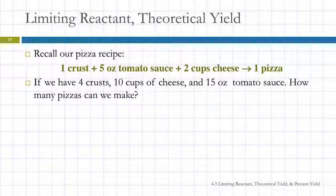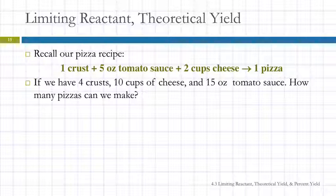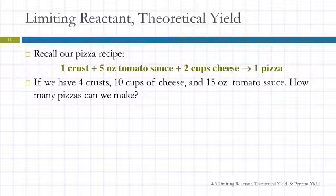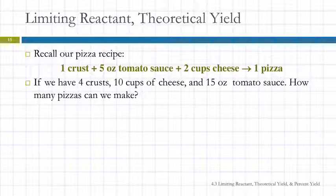As someone wisely pointed out earlier, with our pizza calculation — the 10 cups of cheese — that's provided you have enough of the other stuff, right? That's not necessarily the case. So let's look back at our pizza recipe and what we have available: we have four crusts, 10 cups of cheese, and 15 ounces of tomato sauce. How many pizzas can we make out of that?